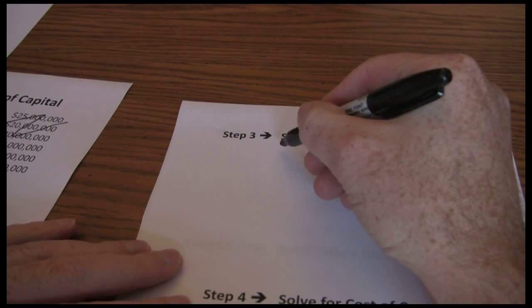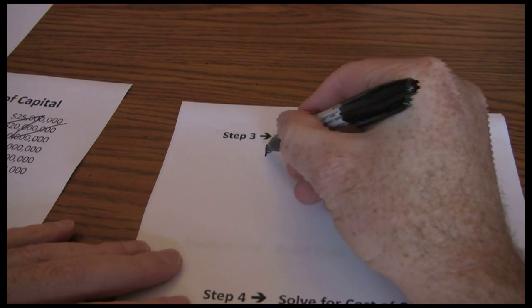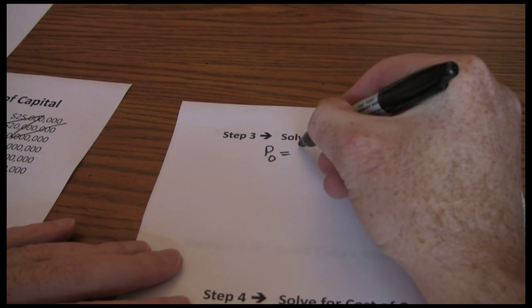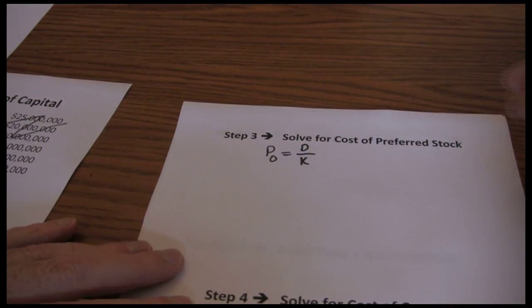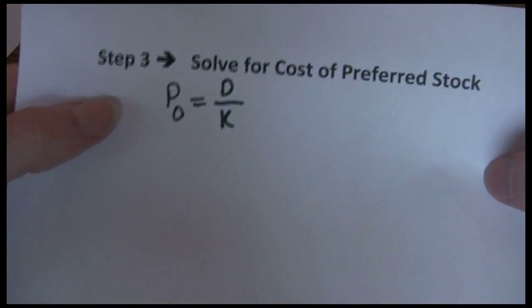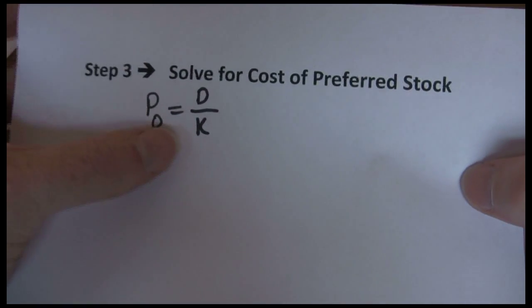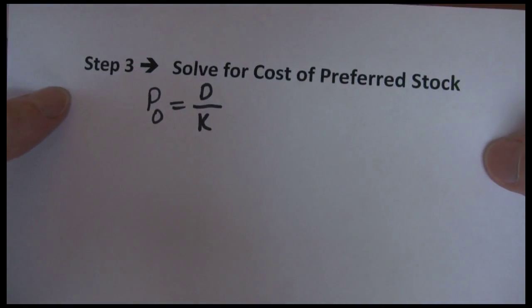Now when we start the preferred stock model, we're starting with our stock valuation chapter where we said the price of preferred stock is just equal to the dividend divided by the required return, the no growth model.